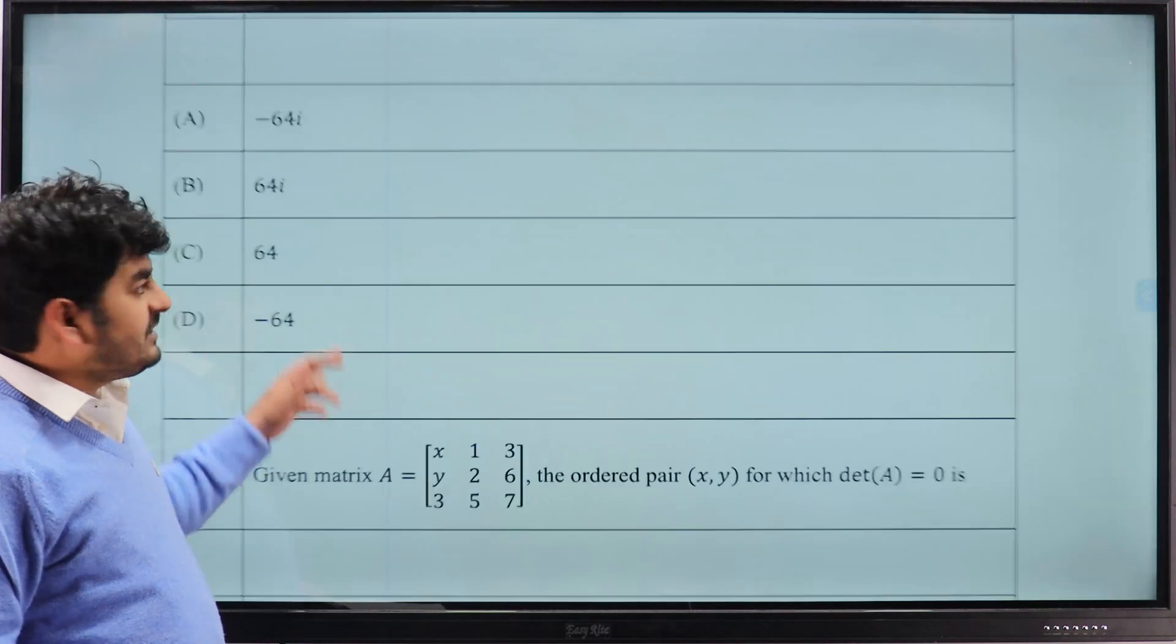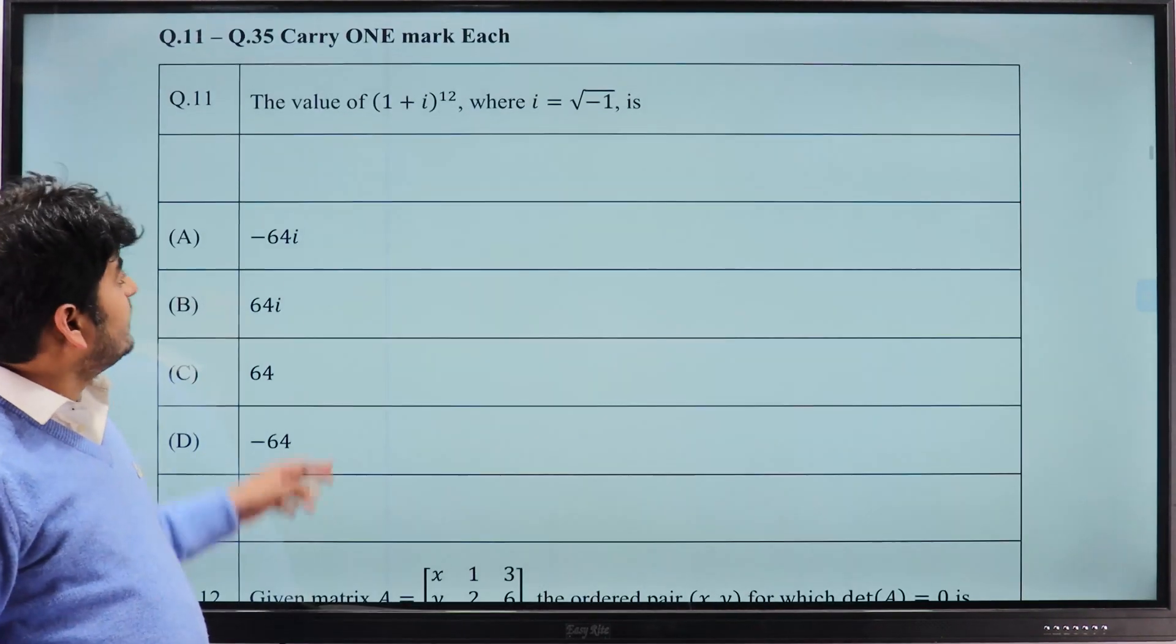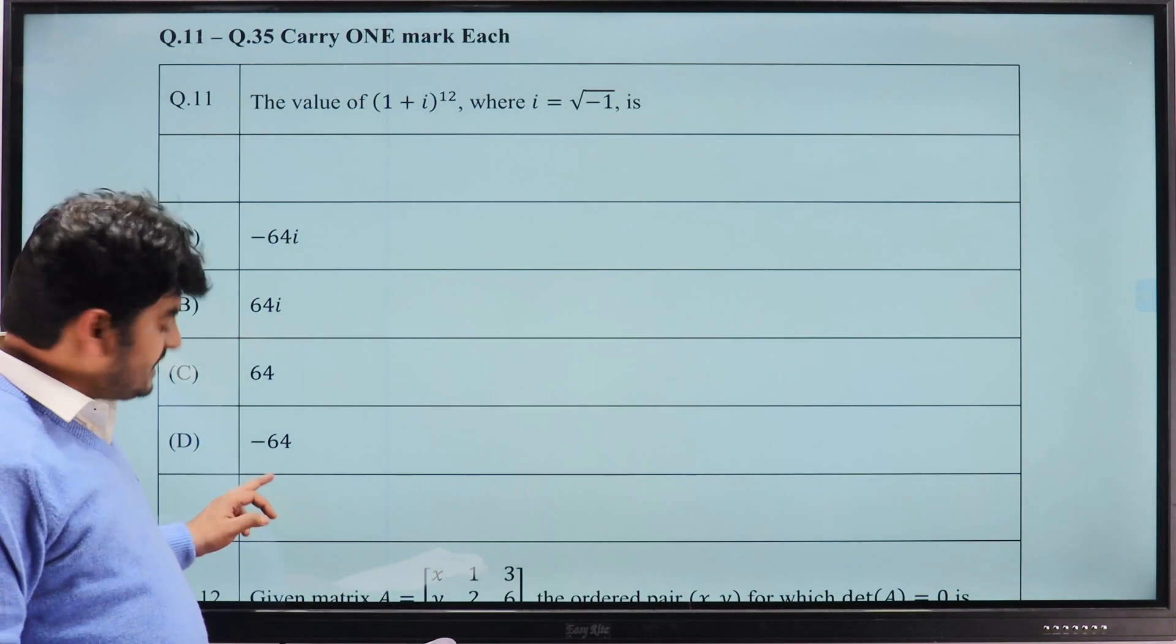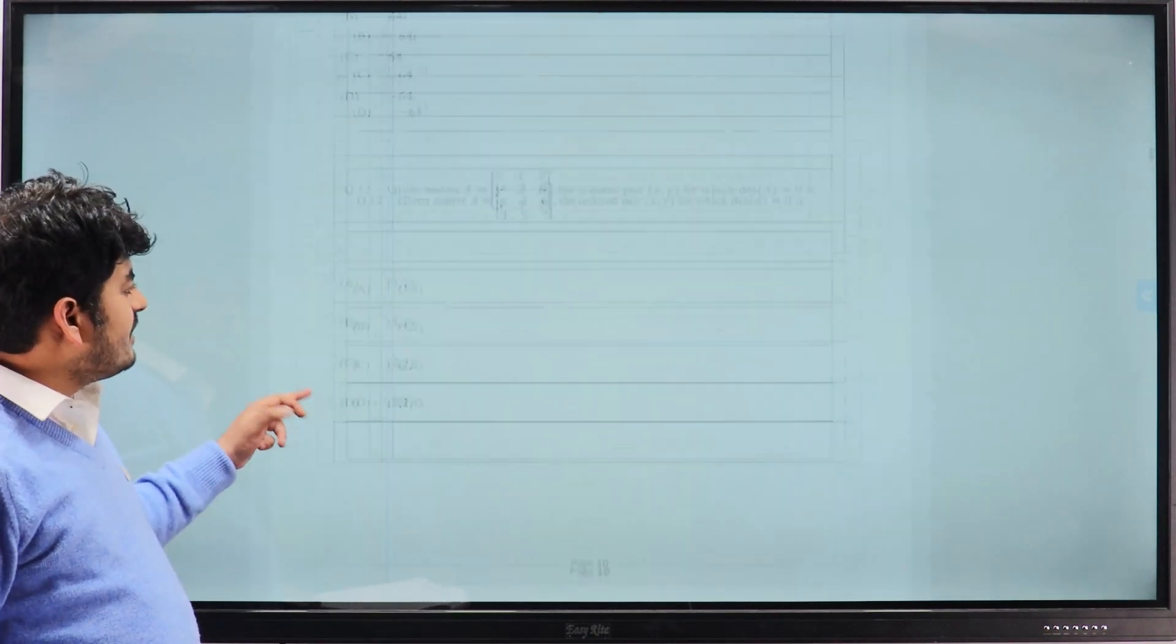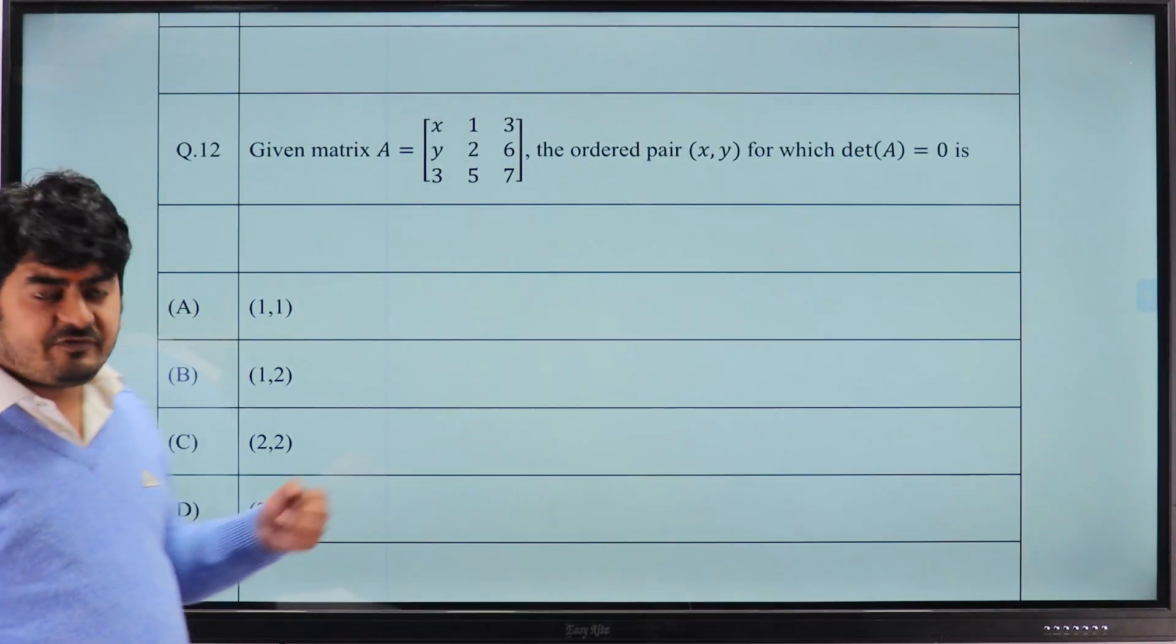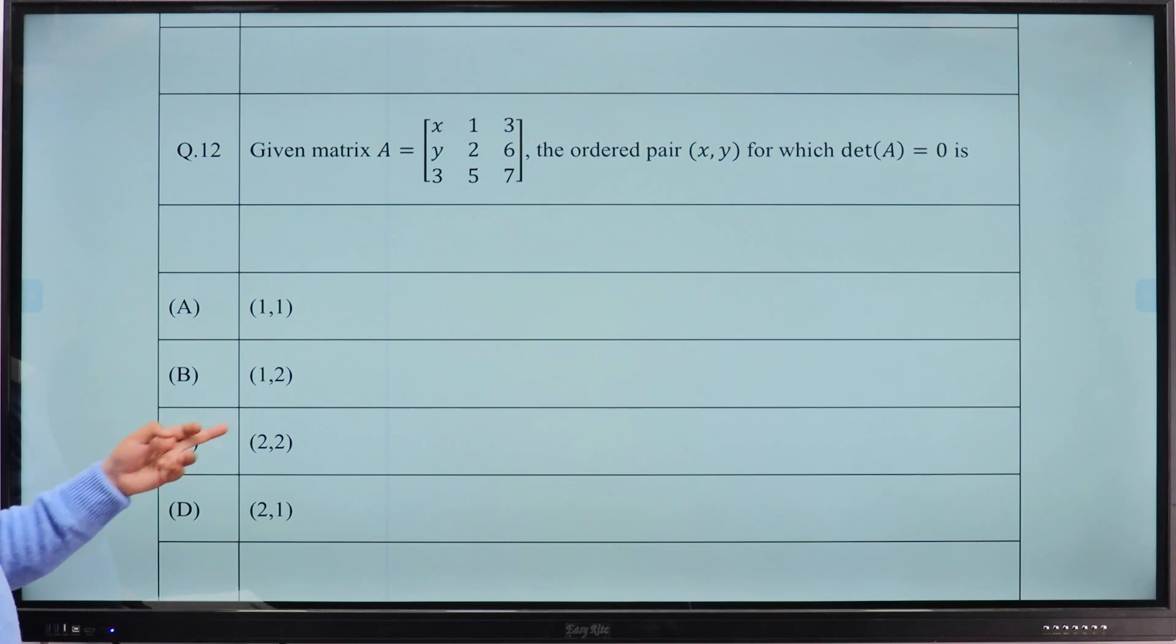Question number 11, now welcome to the technical section. Option 1 plus i to the power 12, option D, minus 64 is the correct answer. From this question of matrix where determinant is 0, what is the value of x and y? Option B, 1, 2 is the correct answer.